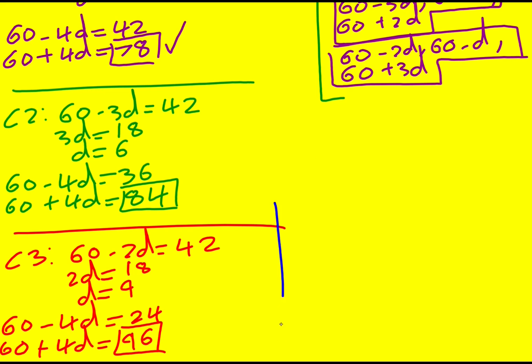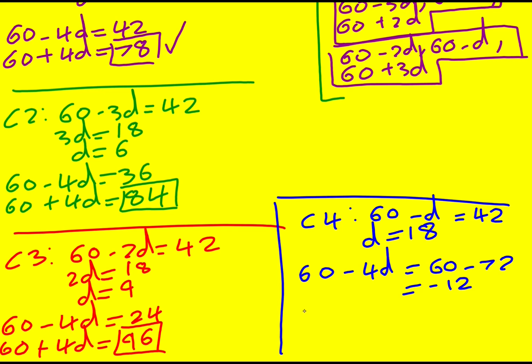This leaves us with case four. 60 minus d, the one before the middle one, is 42, which means d is 18. Now, 60 minus 4d is actually going to be 60 minus 72, giving me minus 12. So actually, immediately, this is not possible. Whilst it might satisfy the condition, it doesn't satisfy it also being a triangle. So we can reject that one.